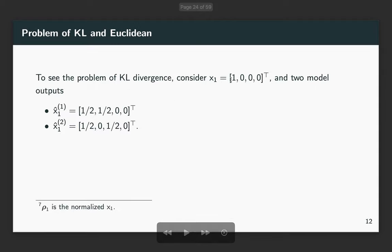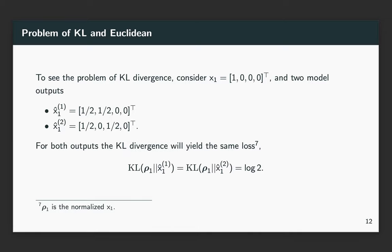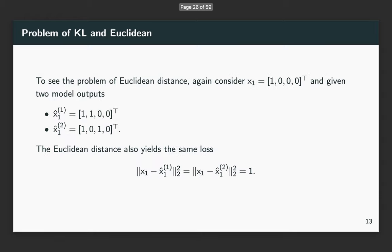Given an observation x_1 and two model outputs x_1-hat_1 and x_1-hat_2, for both outputs, the KL divergence is very similar. Similarly for Euclidean distance, it also yields similar values for the two outputs.